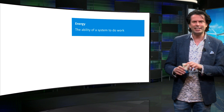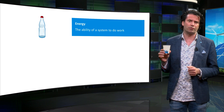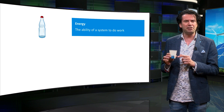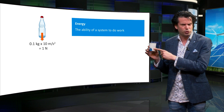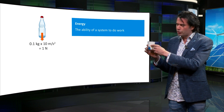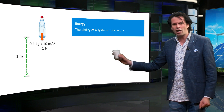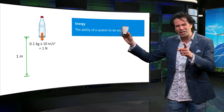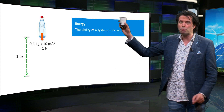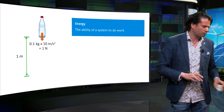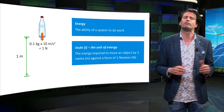Let's consider this cup of water. This cup of water has a mass of about 100 grams, or 0.1 kilograms. Here on planet earth, this cup experiences a gravitational force, which is the mass times the gravity constant of approximately 10 meters per square second. This results in a gravitational force of 1 newton on this cup. Now I lift this cup up by 1 meter. The total energy needed for this action is exactly 1 joule by definition, which is 1 meter multiplied by a force of 1 newton.